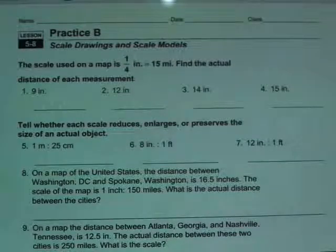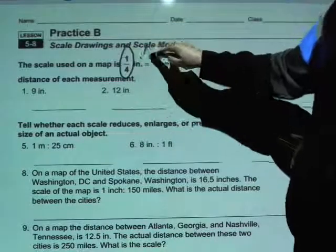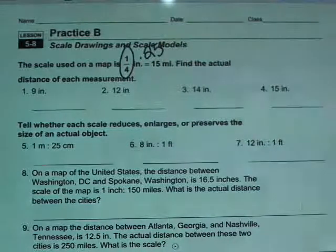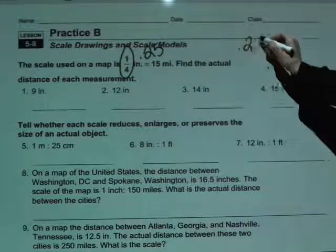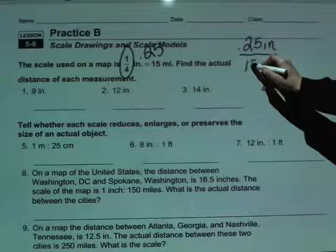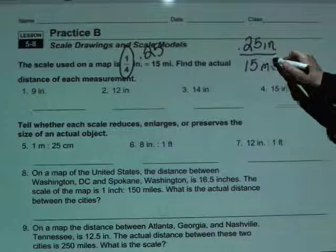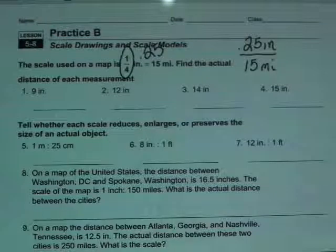Now, the quarter inch there might be bothering some people. So one of the things we're going to do here is we're going to change this to 0.25. It's just going to be easier to write when I'm setting up my proportion to solve here. So we know that 0.25 inches, as in 0.25 inches on the map, is going to be the equivalent of 15 miles in real life, meaning every quarter inch on the map is going to be the same as me walking 15 miles.